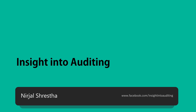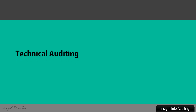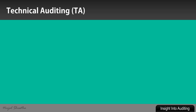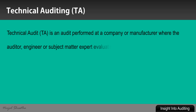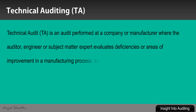Let's discuss technical auditing, also called TA in abbreviated form. Technical auditing is an audit performed at a company or manufacturer where the auditor, engineer, or subject matter expert evaluates deficiencies or areas of improvement in a manufacturing process, system, or proposal.